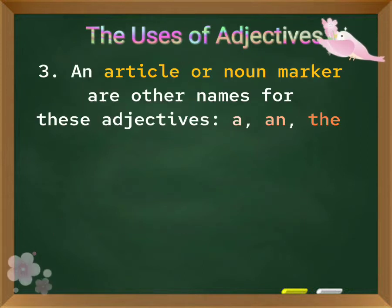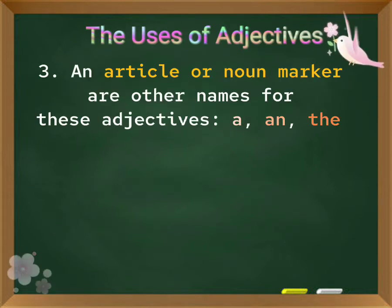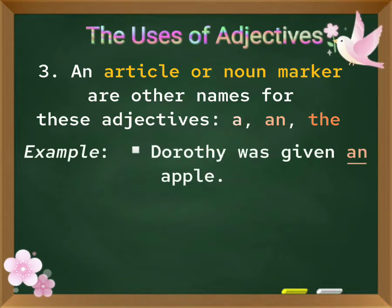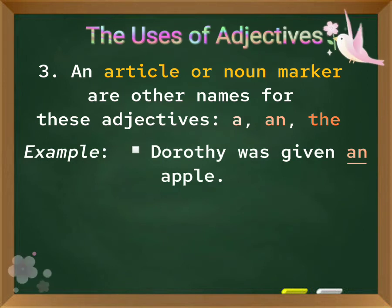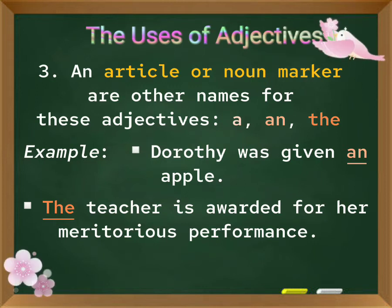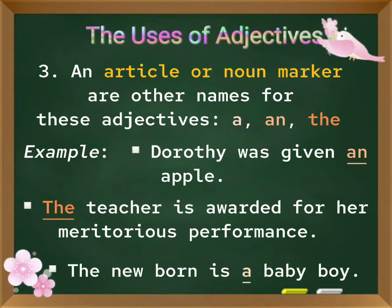3. An article or noun marker are other names for these adjectives. 4. A, an, and the. Examples: Dorothy was given an apple. The teacher is awarded for her meritorious performance. The newborn is a baby boy.